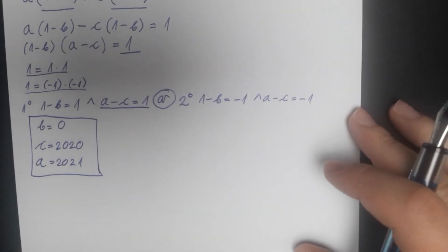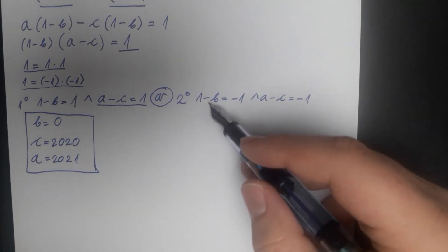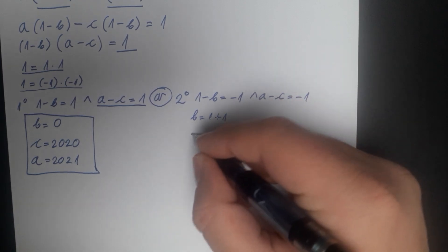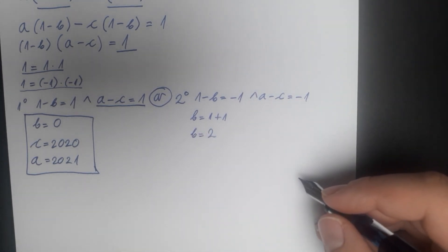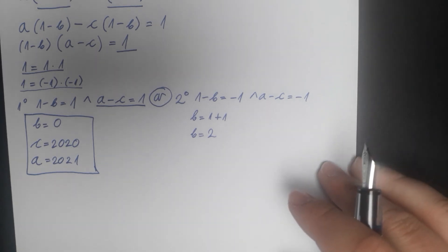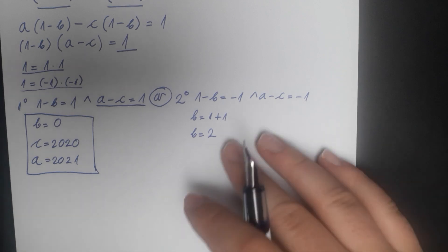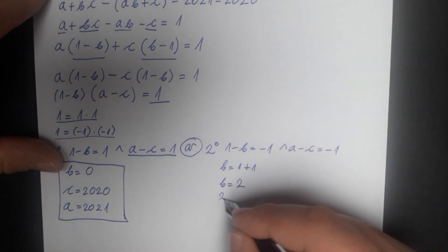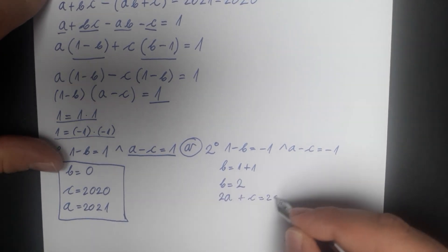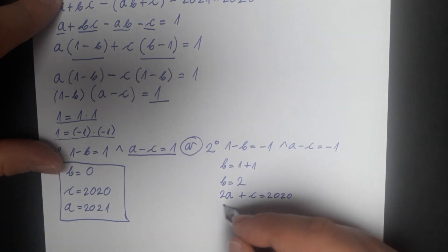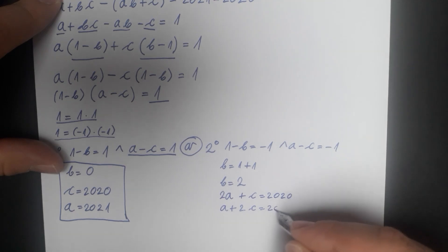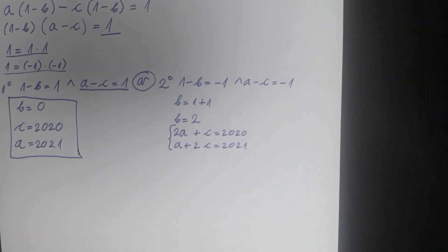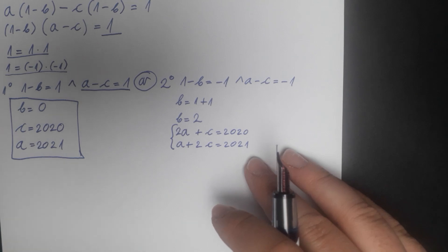Now let's focus on Case 2. From (1 minus b) equals negative 1, we get b equals 2. Returning b equals 2 into the original equations, we get 2a plus c equals 2020 and a plus 2c equals 2021. We now have a system of two linear equations with two unknowns to solve.